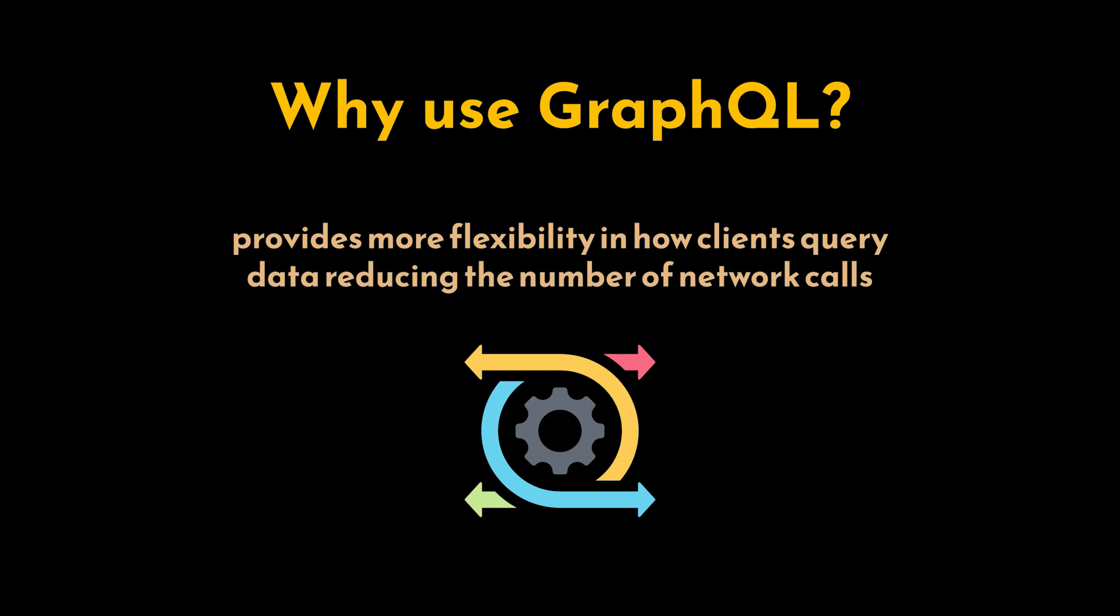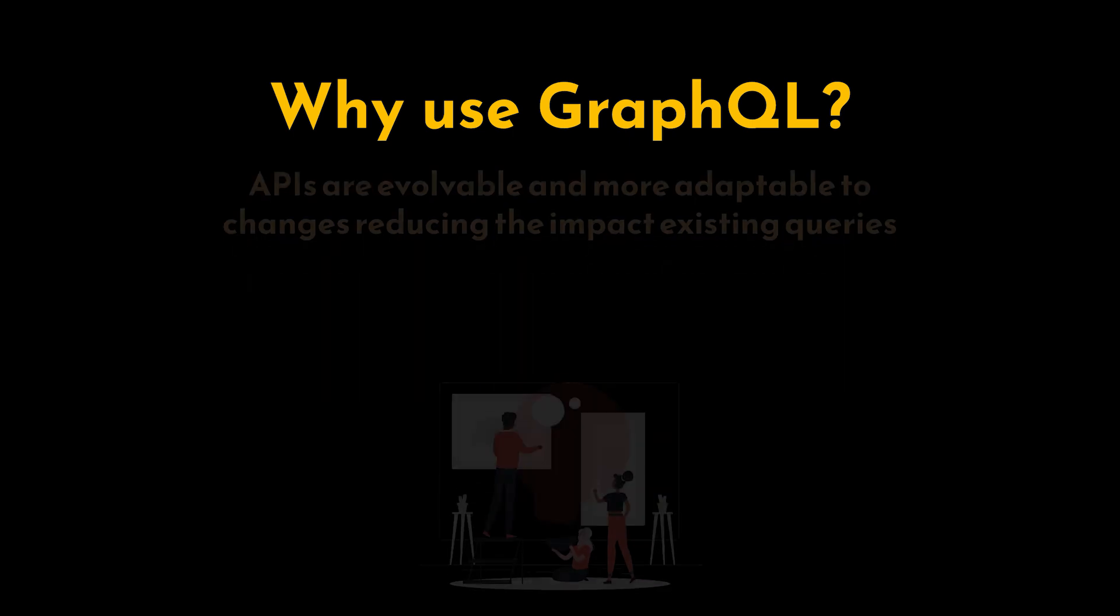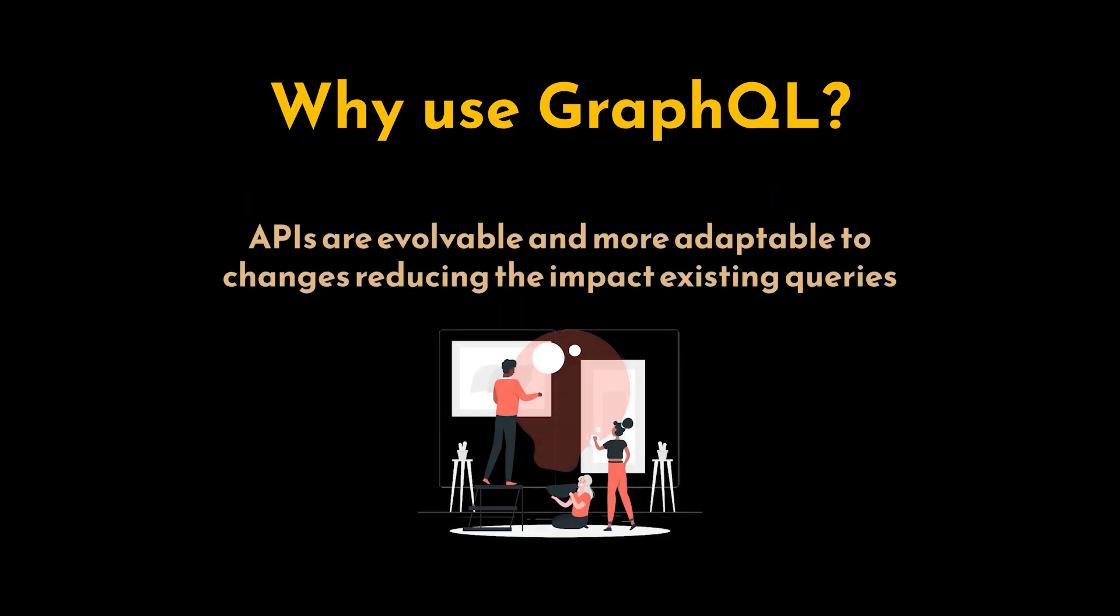GraphQL is flexible. GraphQL provides more flexibility in how clients can query data. They can fetch multiple resources in a single request, reducing the number of network calls. GraphQL APIs are evolvable. They are more adaptable to changes as we can add new fields and types to the schema without impacting existing queries, allowing us to evolve our API more easily.